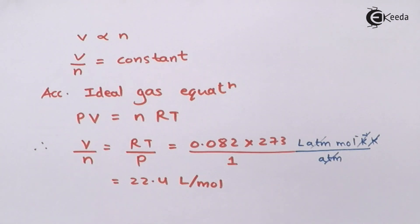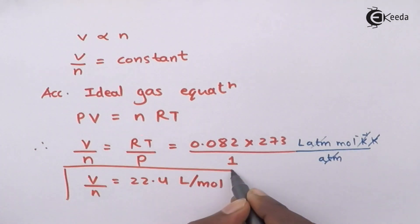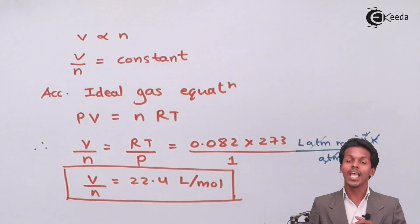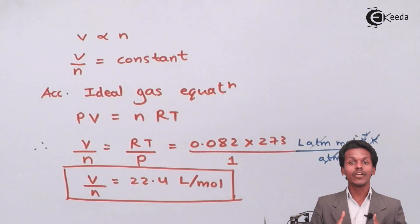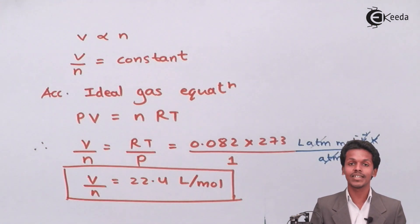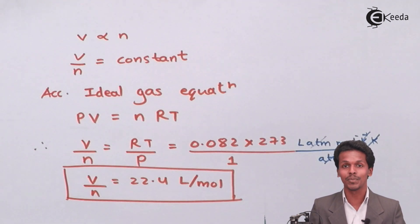From this, we have clearly shown that V divided by N is nothing but the molar volume, and this was all possible because of Avogadro's Law, which is very influential in solving problems. I hope you liked this video and have understood this concept. Please share it with your friends and don't forget to subscribe to the eGita channel. Thank you so much.